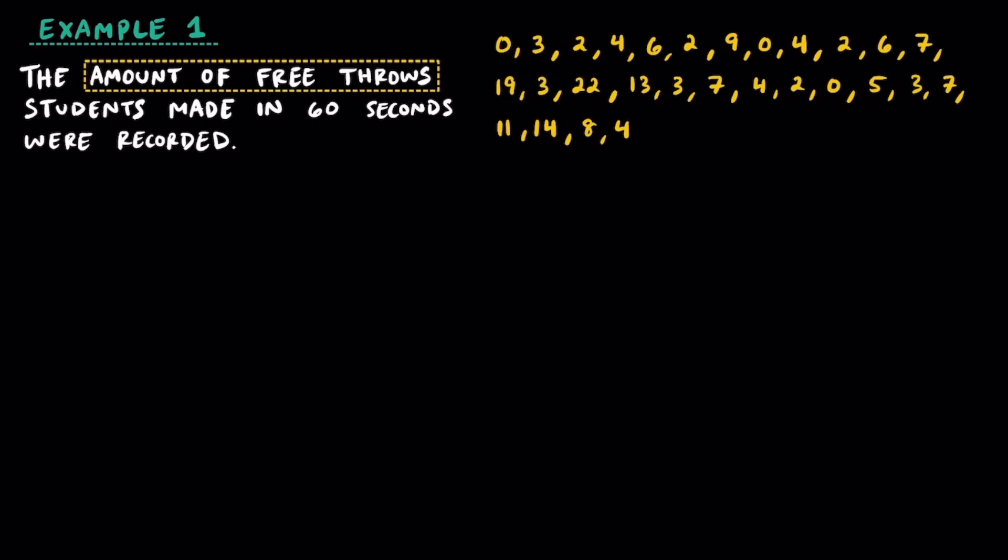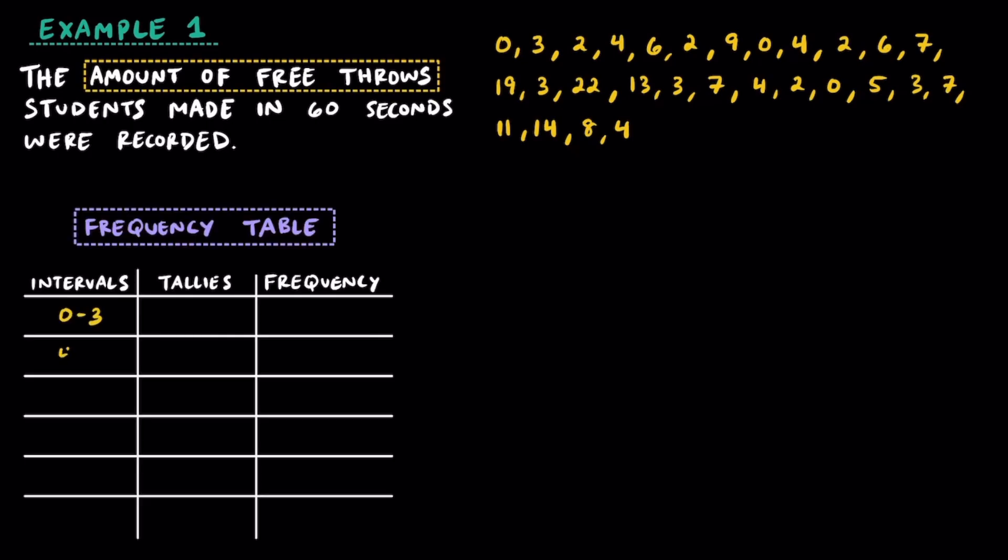Let's now take all of this data and organize it into a frequency table. Just like the previous example, I'm going to create six intervals again, and I'm going to make sure that they're all the same size and there's no overlapping, and that there's going to be at least one tally in the first interval, and at least one tally in the last interval.